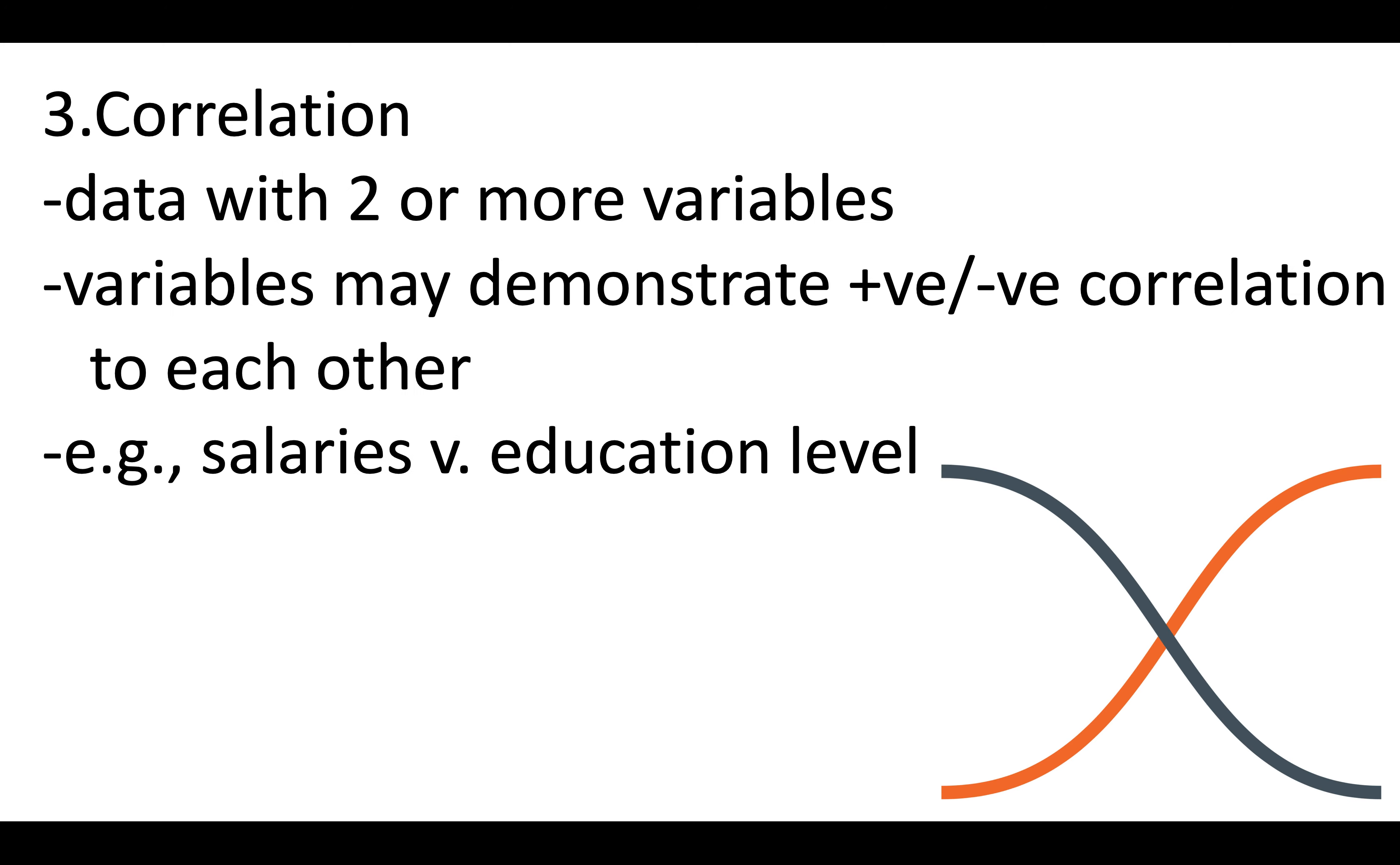Number three: correlation. Correlation deals with data with two or more variables, and what you're looking for is how the variables may demonstrate a positive or negative correlation to each other. For example, you might see the relationship between educational level and salaries—presumably higher education level means higher salary, and the reverse. But who knows?